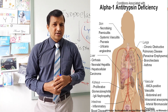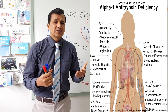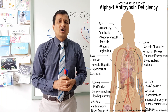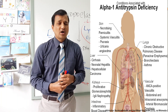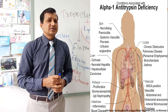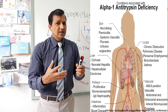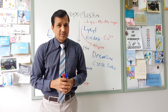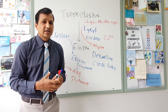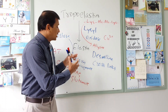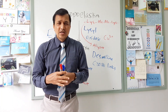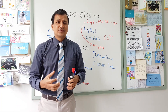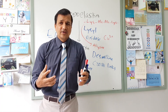Signs and symptoms of alpha-1 antitrypsin deficiency include shortness of breath due to emphysema, bronchiectasis, wheezing, and ultimately congestive heart failure. Patients also have liver cirrhosis and liver failure. Treatment includes liver transplantation, and infusion of alpha-1 antitrypsin has also been tried with good results.